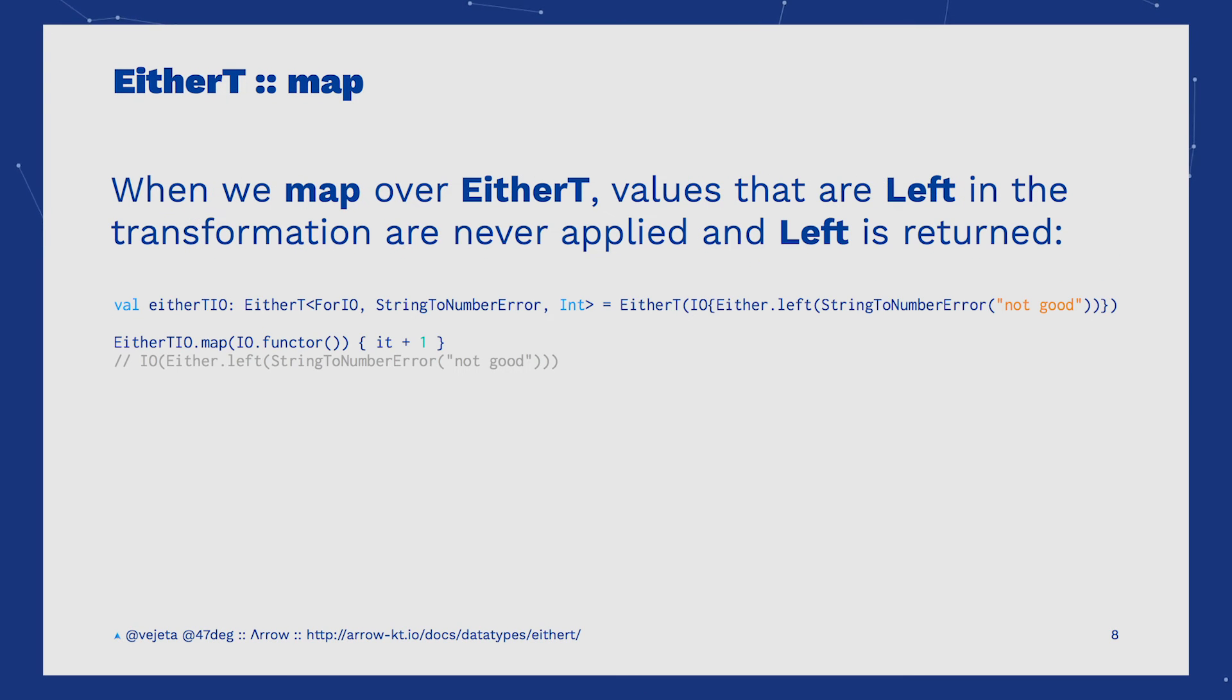We have mentioned that map operates over the right value. So in this example, we can see that if the wrapped Either is a left, the defined transformation inside the map will never be applied, and that EtherT will return the left case.